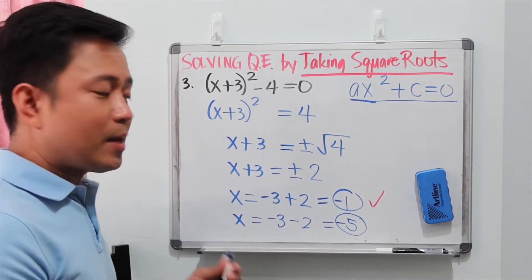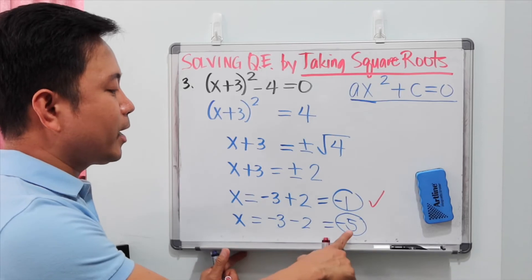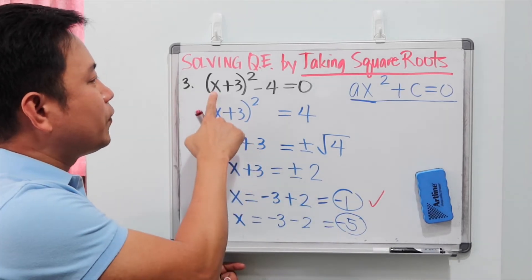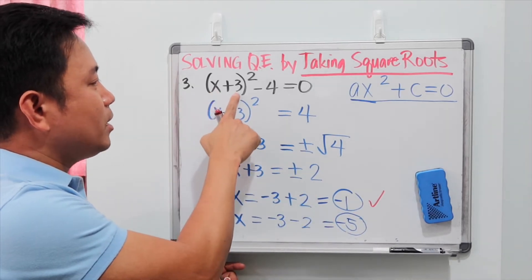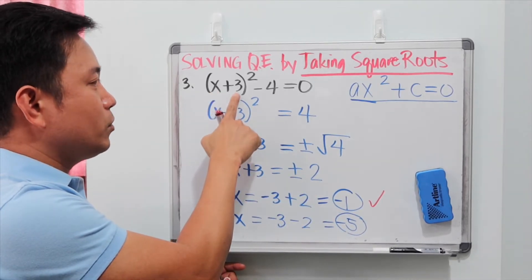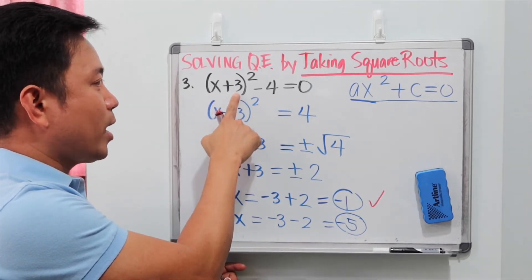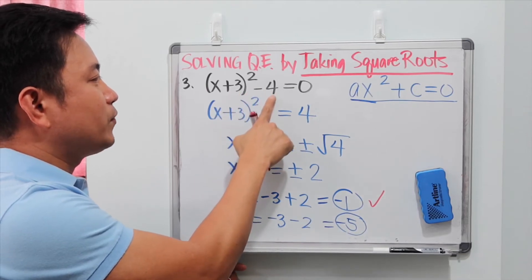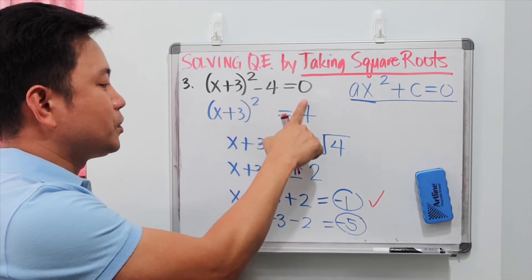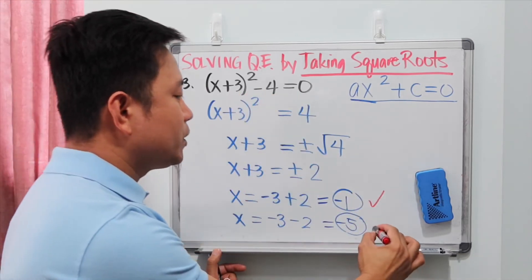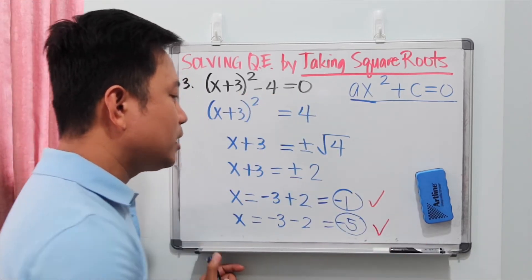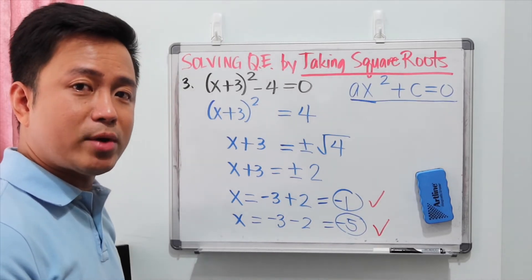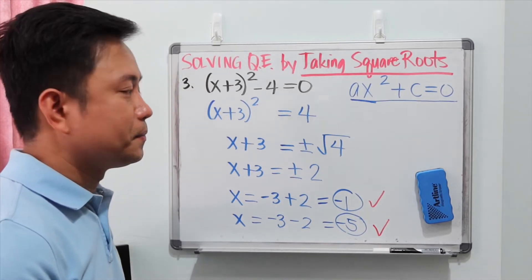Same thing with negative 5: plugging it in, negative 5 plus 3 is negative 2, squared is 4, minus 4 equals 0. That's also true. So negative 1 and negative 5 are both roots of this quadratic equation.